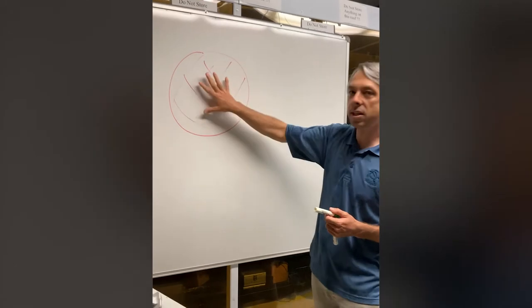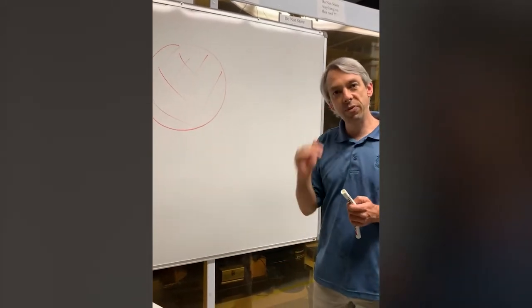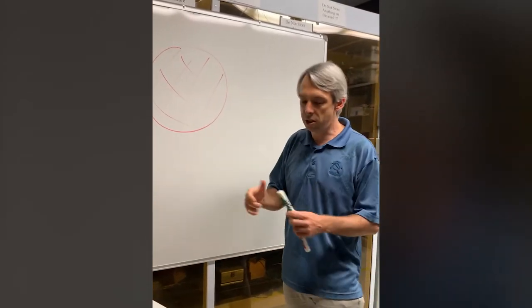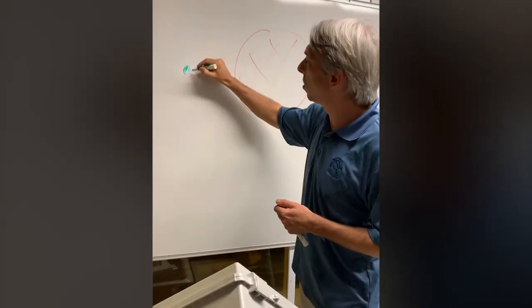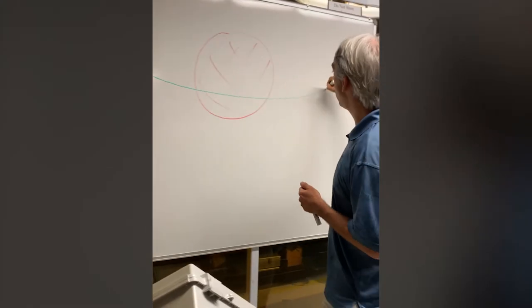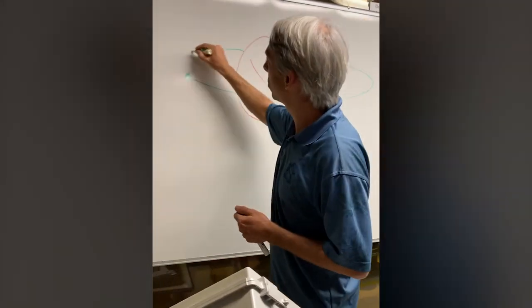And if you measure the brightness of this star it should be fairly constant over time. It shouldn't change. What happens if a planet, a little green planet for example, is going around the star. So it's going around in a circle like this.